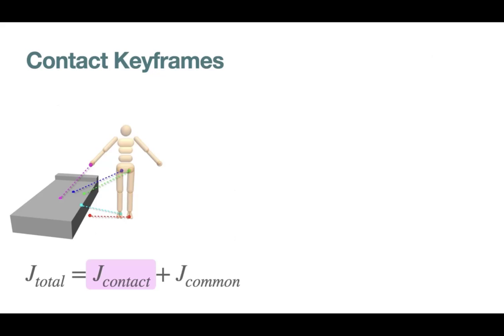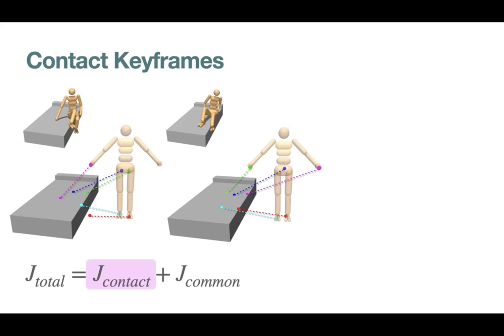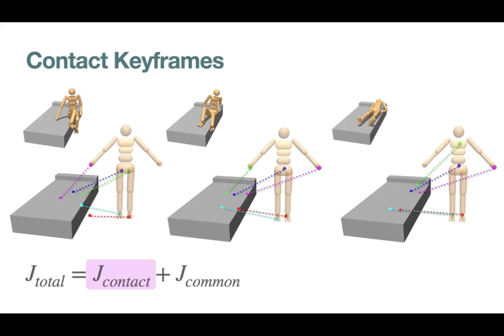To help us define complex contact-rich motions, we introduce contact keyframes. They are a set of body-to-environment or body-to-body contact pairs. The distance between these pairs is added to the total optimization cost. This is a compact way to loosely define key poses during a motion without having to specify every joint angle.